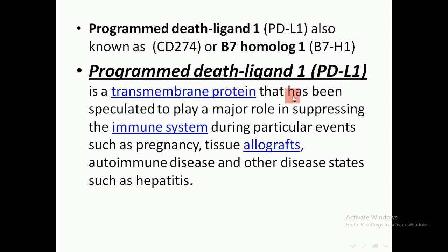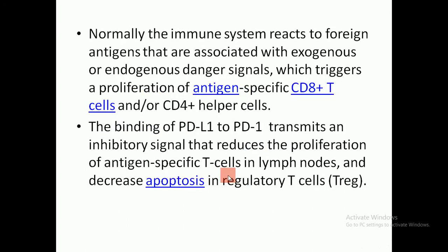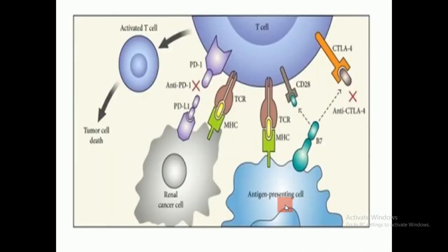PD-L1 is a transmembrane protein that plays a major role in suppressing the immune system during particular events such as pregnancy, tissue allografts, autoimmune disease, and other disease states such as hepatitis. Normally, the immune system reacts to foreign antigens associated with exogenous or endogenous injury signals, triggering proliferation of antigen-specific CD8 T cells or CD4 helper cells. The binding of PD-L1 transmits inhibitory signals that reduce proliferation of antigen-specific T cells and decrease apoptosis in regulatory T cells.